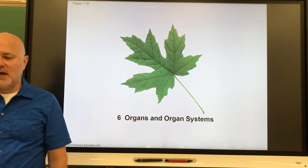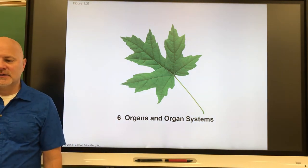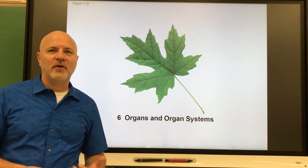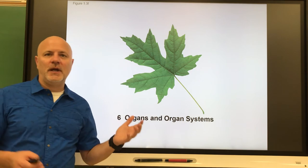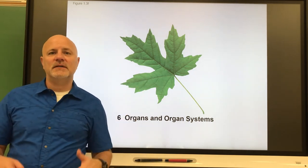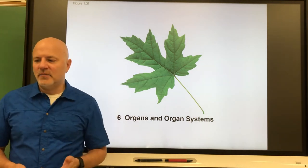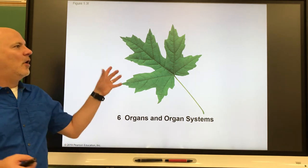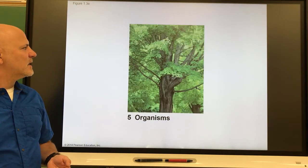Above tissue is the organ level. An organ is a structure composed of two or more tissue types that performs a specific function. A single leaf is an organ — it's built to photosynthesize, which is why leaves are generally broad, to capture as much sunlight as possible. An organ system is a group of organs that work together to accomplish a common purpose — all the leaves together form an organ system for photosynthesis.